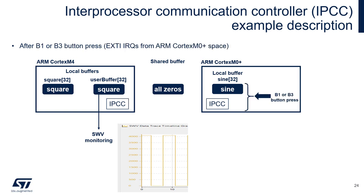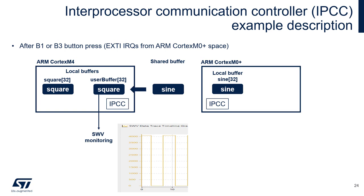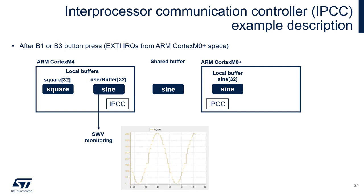Once we press either button B1 or B3 — both assigned to Cortex-M0+ — the sine buffer will be copied to the shared buffer. After this operation is completed, IPCC will generate an interrupt indicating that data has been transferred to the shared buffer in the TX direction. This interrupt is raised on Cortex-M4, which then copies the content of the shared buffer to its user buffer, replacing the square wave samples with the sine wave samples. We will then see the sine wave on the single wire viewer.